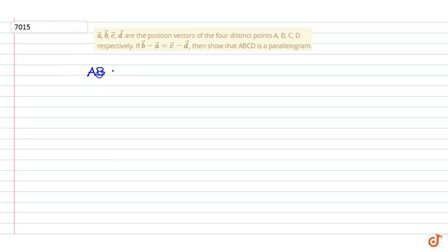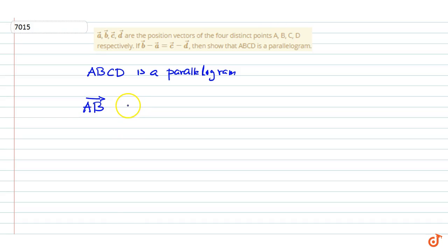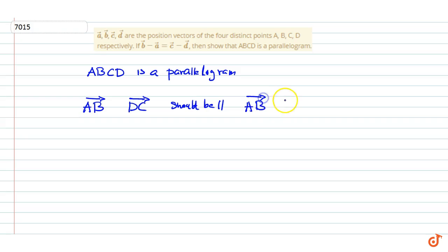We know that if ABCD is a parallelogram, then vector AB and vector DC should be parallel and equal in magnitude. That is, the magnitude of vector AB should be equal to the magnitude of vector DC.